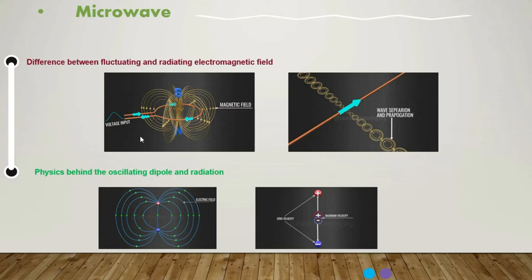However, this fluctuating field around the source is of no use in transmitting signals. The electromagnetic field here doesn't propagate; instead, it's just fluctuating around the source. In an antenna, the electromagnetic wave needs to be separated from the source and they should propagate, as shown here in this second figure.